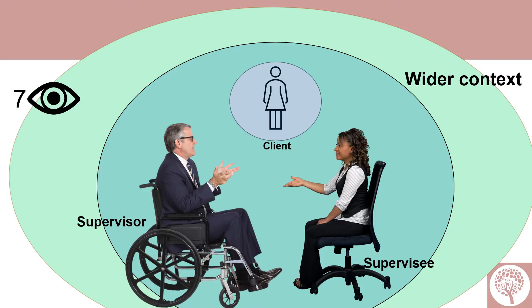The seventh eye of supervision focuses on the wider context in which the client, therapist, and supervisor work. For the client, it's about their background and the reasons for seeking help. It covers the impact of the ethical framework and law you are bound by, and the wider influences in both your life and the client's life — present and past. The supervisory relationship and previous experiences each person brings, including professional differences, are important. The supervisor also recognises their own biases and stereotypes, and any ethical or moral dilemmas that need to be explored are covered in this wider context.